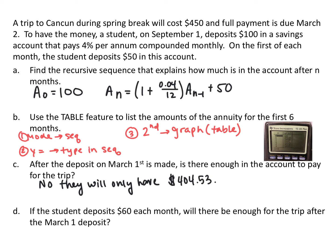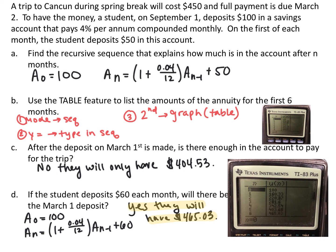So now we want to know: if the student deposited $60 each month instead of $50, would there be enough money on the March 1st deposit? So I set up my recursive formula — a sub 0 is still 100 — and then a sub n equals 1 plus 0.04 over 12 times a sub n minus 1 plus 60 this time. I changed the 50 to a 60 in my graphing calculator and created the table. Now in March, we'll have $465.03. So yes, they will have enough money on March 1st to go on their trip to Cancun. So this has been 12.1, which is an introduction to sequences.